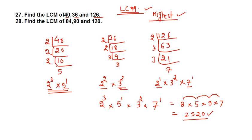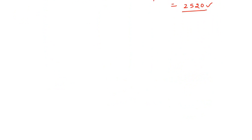So the LCM of 40, 36, and 126 is 2520. I hope the method of finding LCM is clear. This is important as we will go to more complex questions — it will help you. Let us take the next example: 84, 90, and 120. Let us find out the prime factors of 84, 90, and 120.